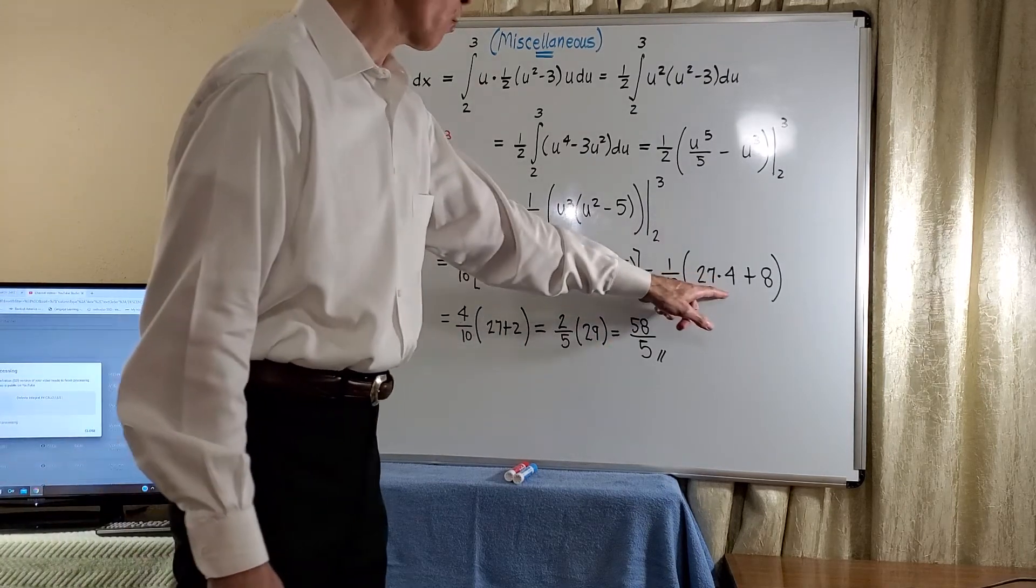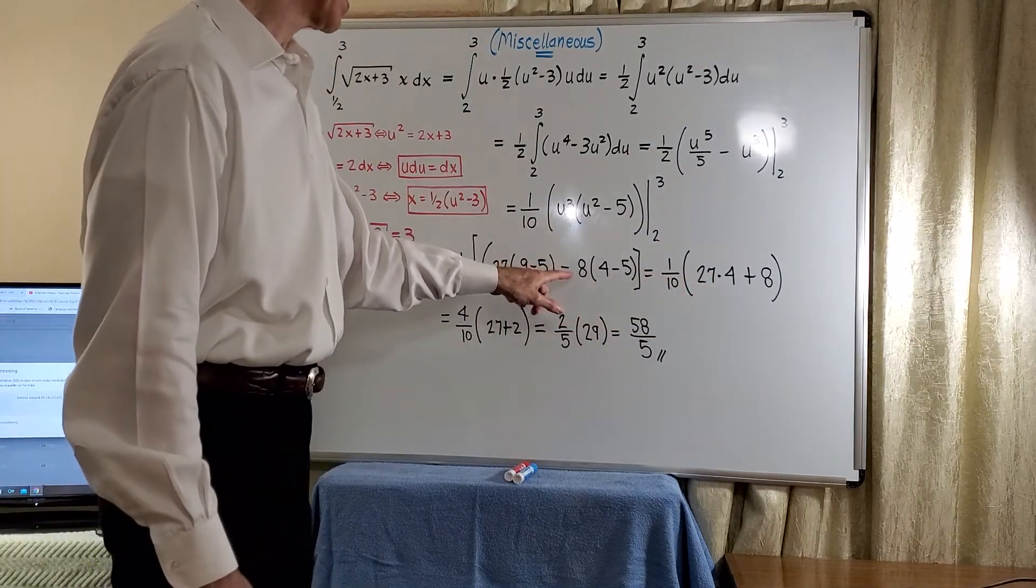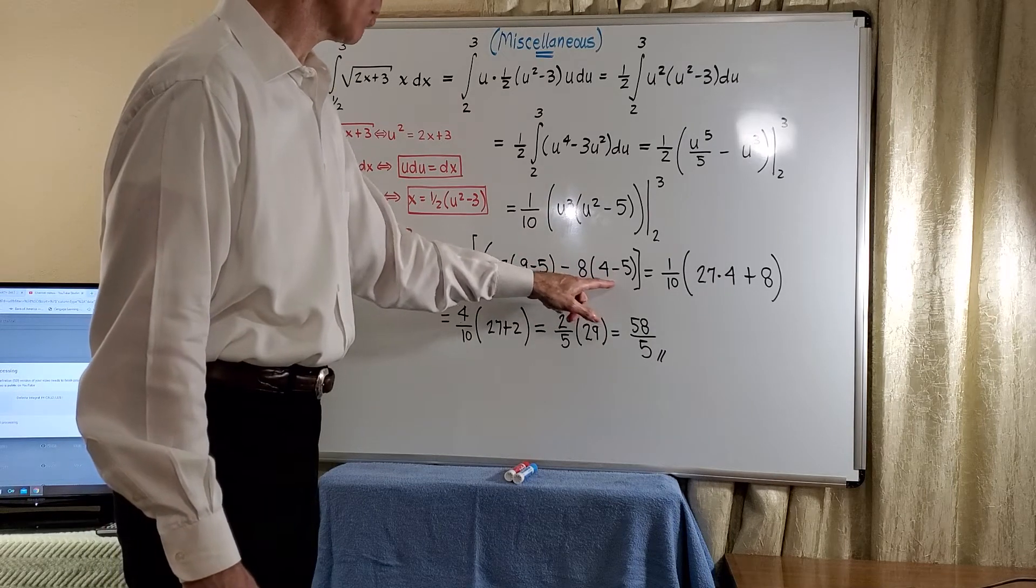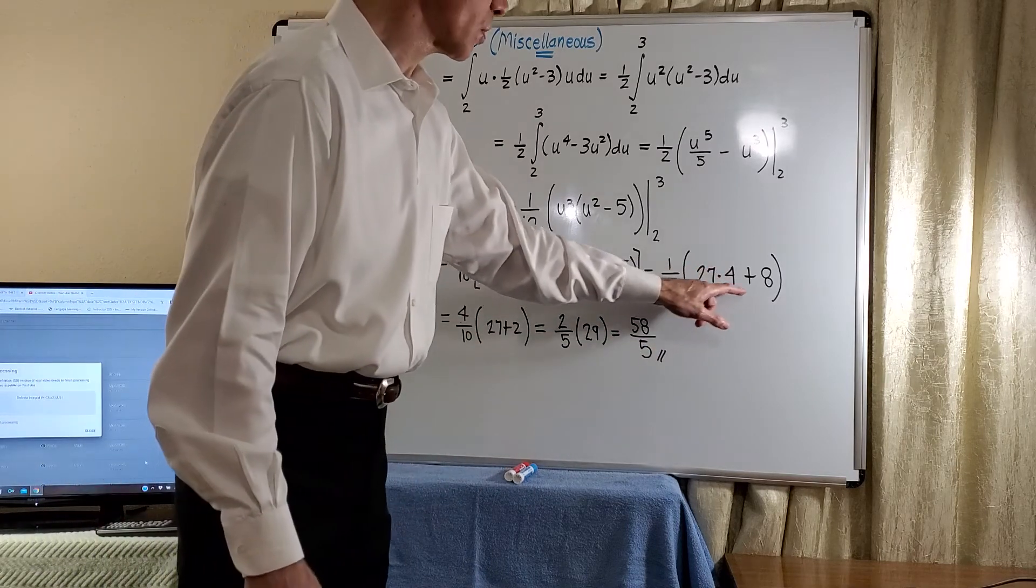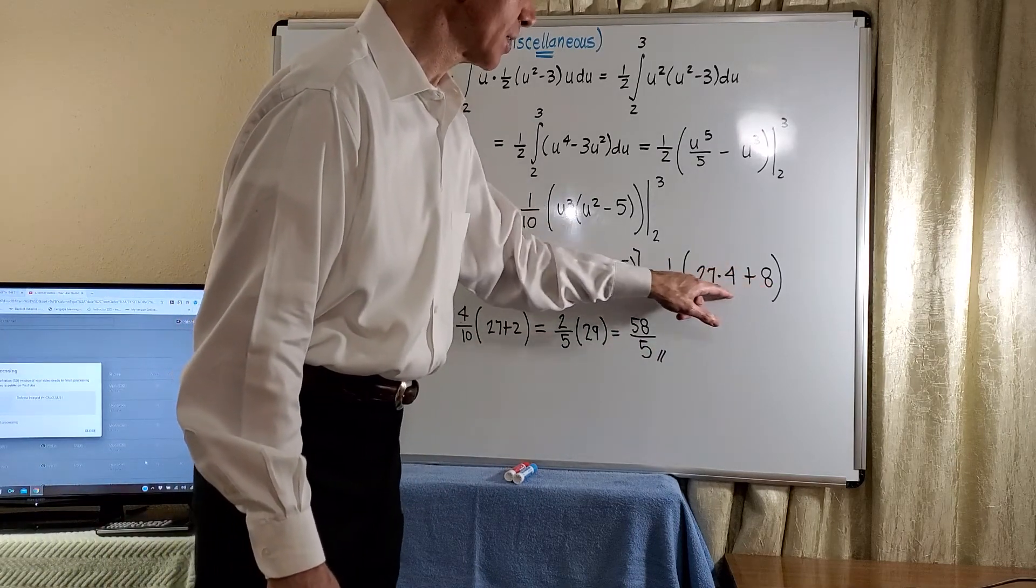This will be 27 times 4. And here, we've got a negative 8 and a negative 1. Negative, negative will give us a positive 8. And here, if you like, you can go ahead and factor the 4 that we have in each of these terms.